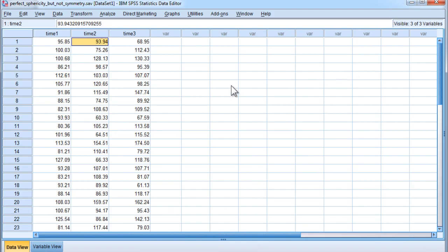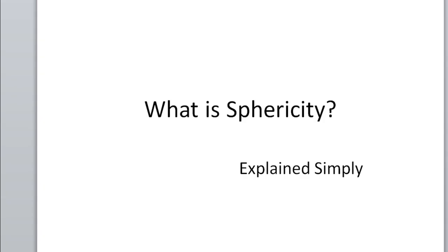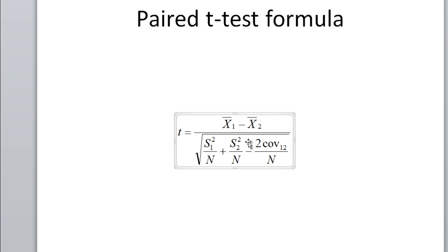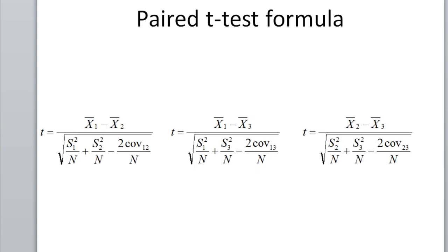So what is sphericity? How did I manage to get these data to have perfect sphericity? I need you to go back to the paired t-test formula. There are various forms of this formula, but in my opinion this one is the most interesting and intuitive. The denominator is the standard error of the difference between two means. This last term on the right side — two times covariance divided by n — is unique to the paired sample t-test. If you remove it, you'd have the independent sample t-test formula. In a one-way within-subjects ANOVA with three levels, there are three possible pairwise paired sample t-tests.